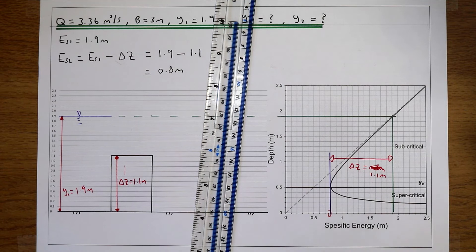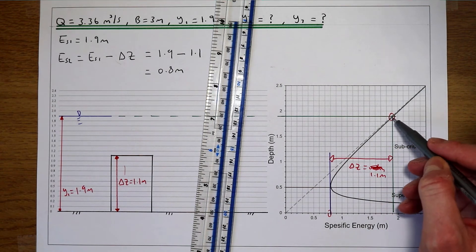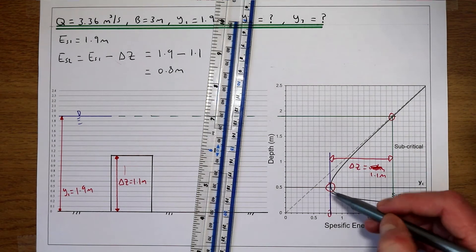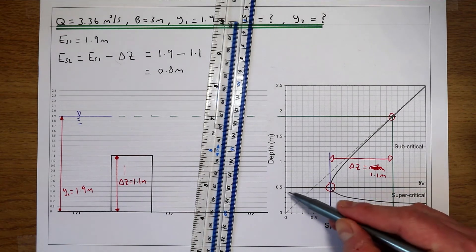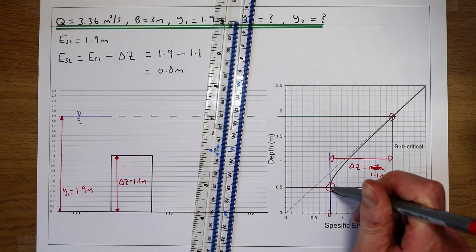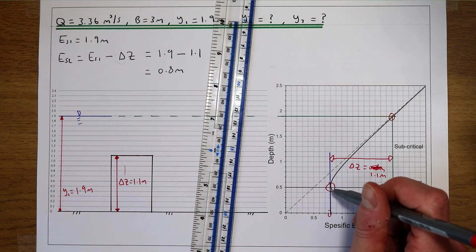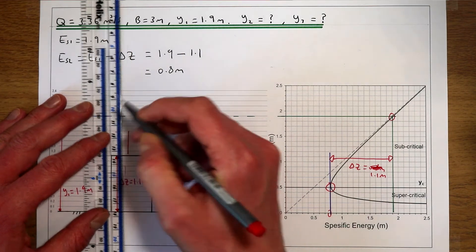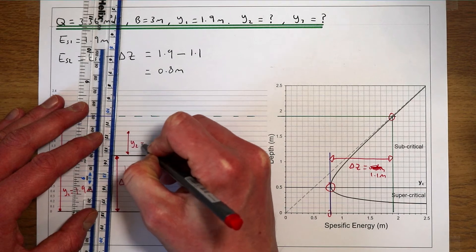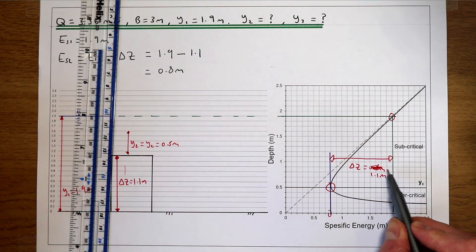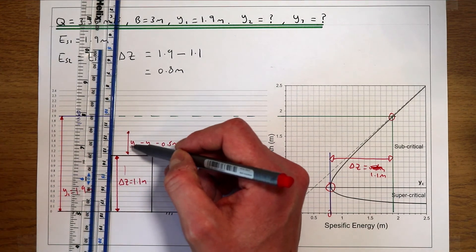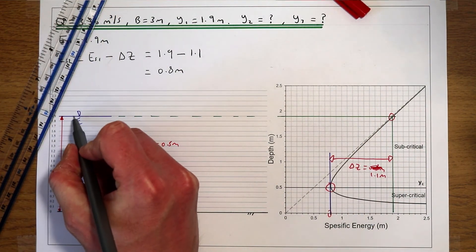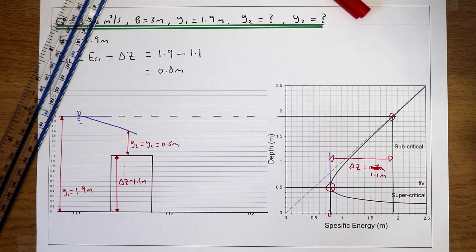To find the flow depth, we follow the profile from where our initial flow depth and specific energy level started, and keep going until we get to our new flow depth. The intersect of the new specific energy level of 0.8 metres with the profile occurs at 0.5 metres, which is also the critical flow depth. So at this point there's only one possible flow depth, which is 0.5 metres. Our flow profile reduces from 1.9 metres down to 0.5 metres — the critical flow depth — over this blockage.